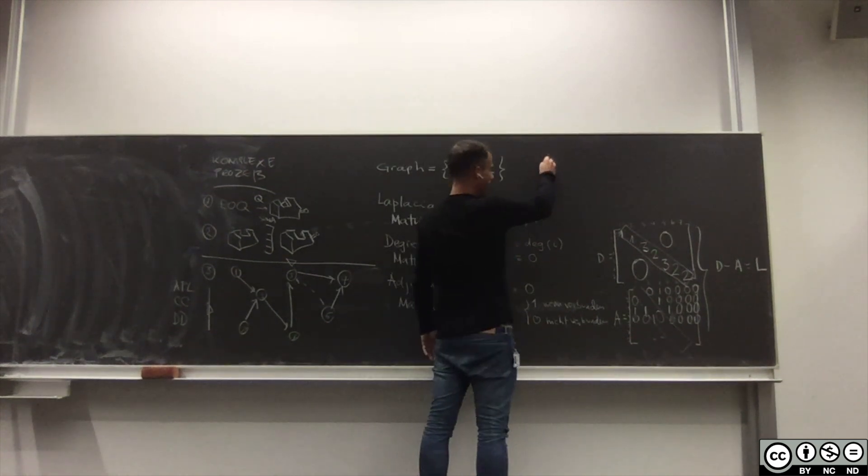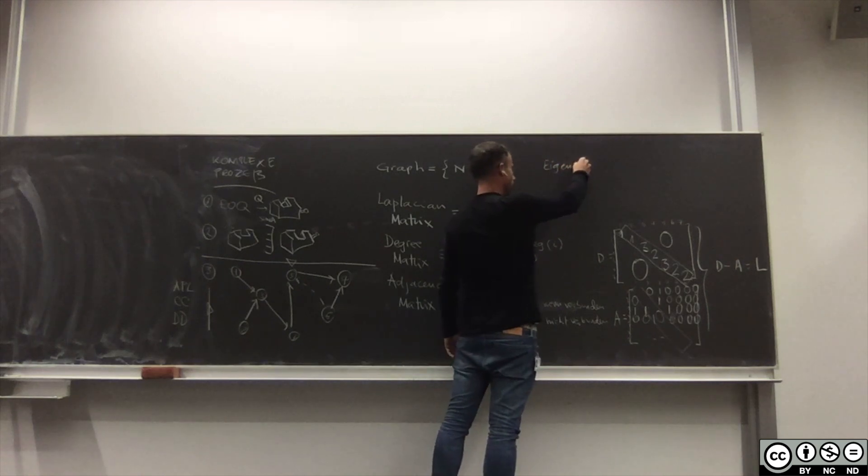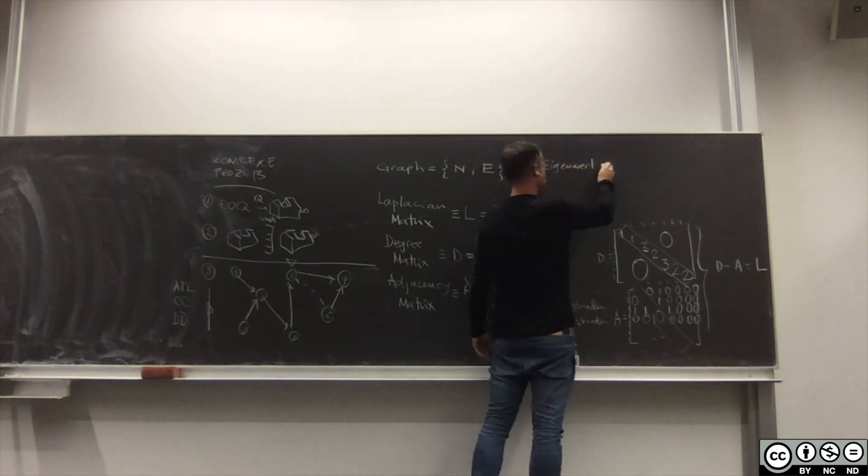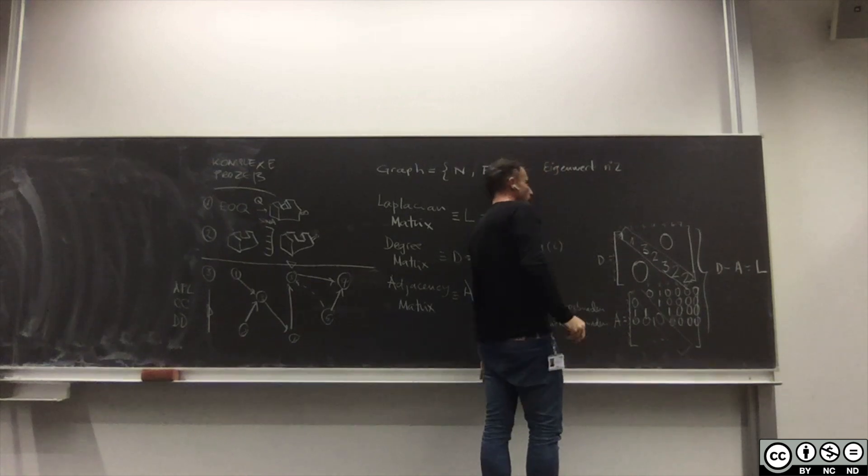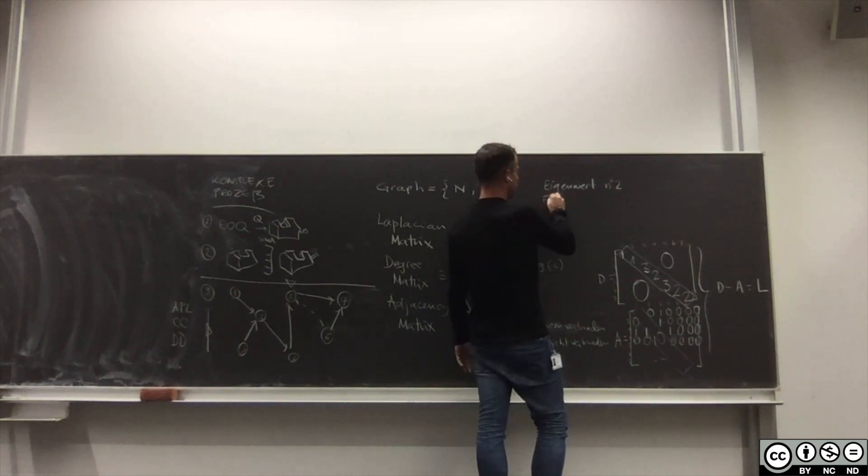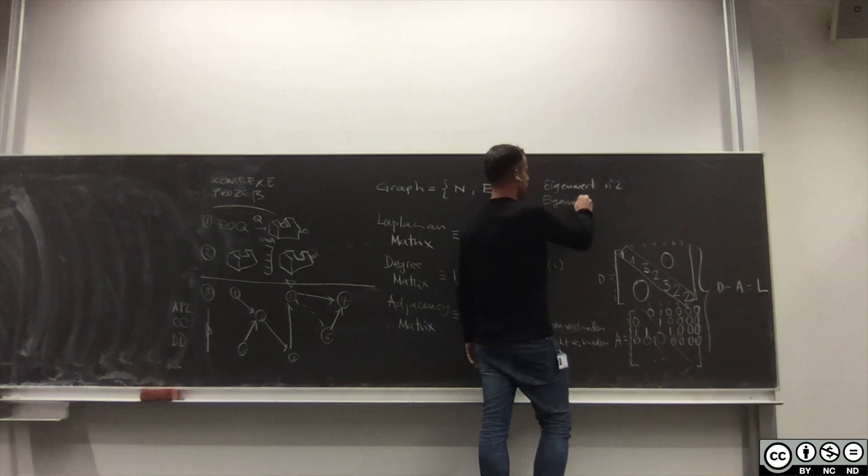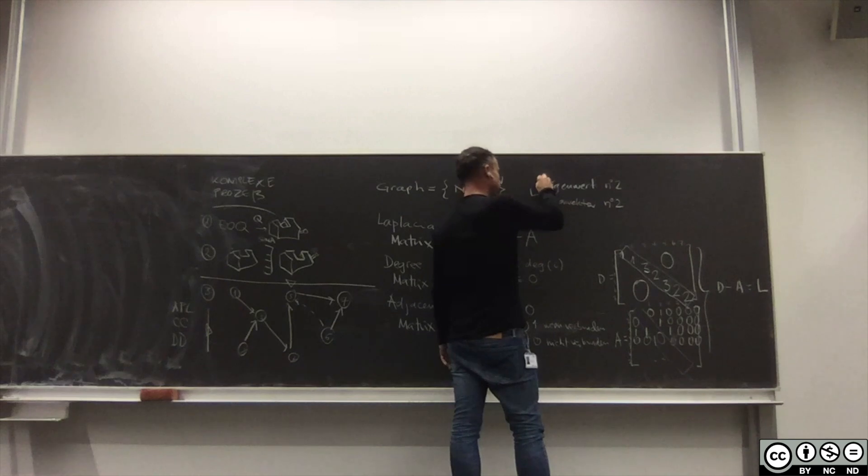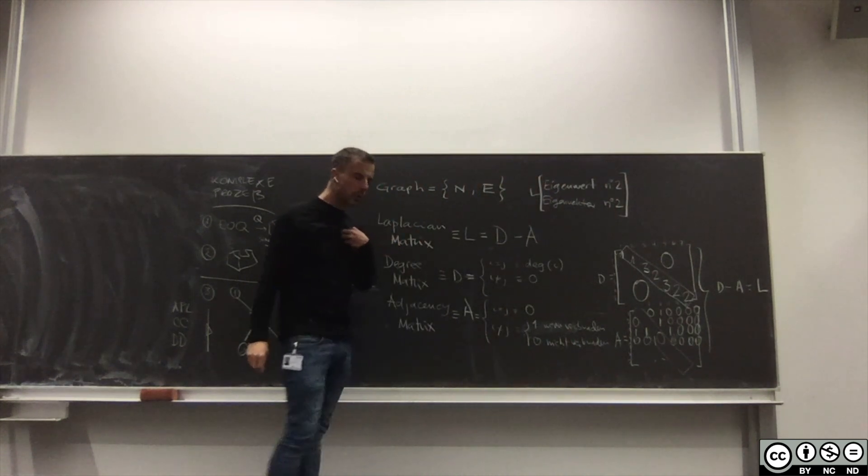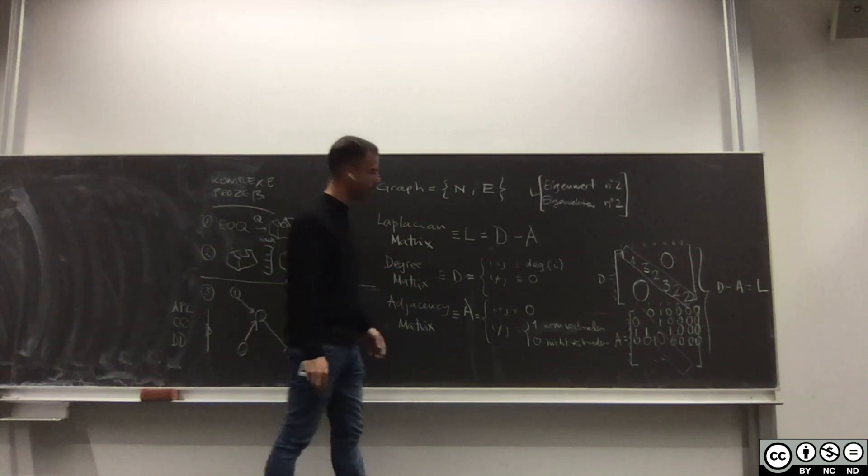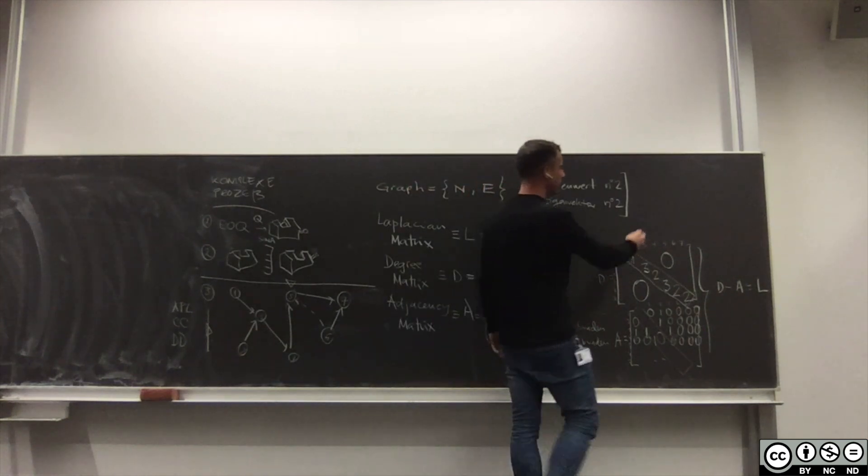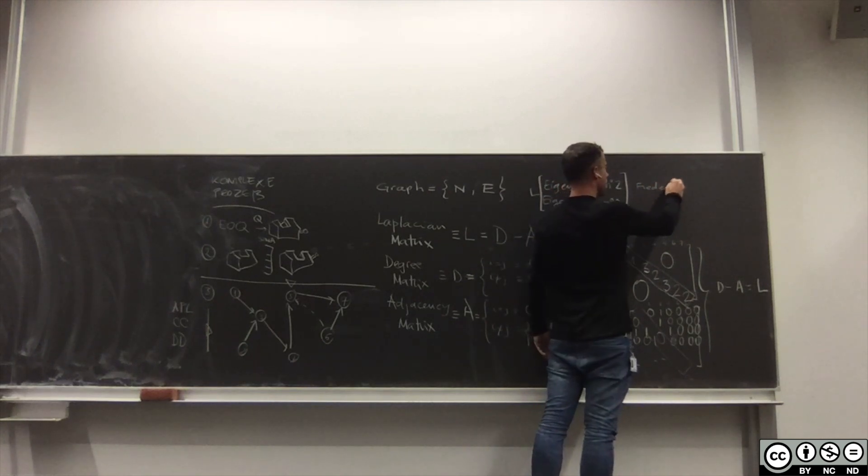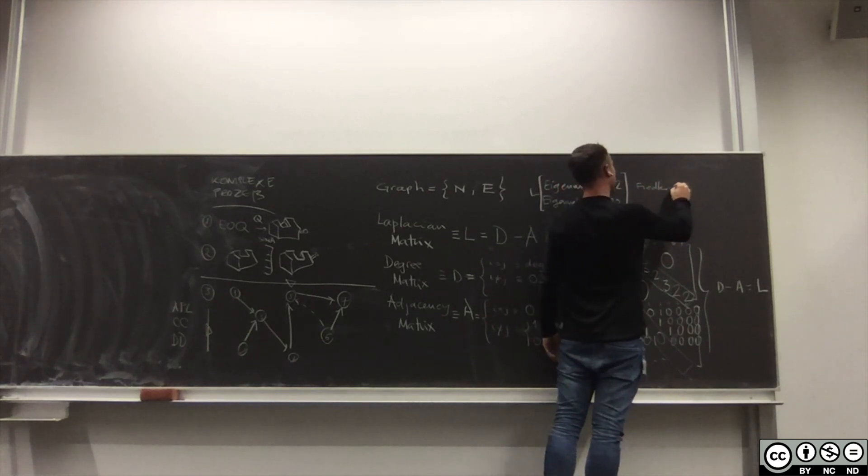Dass der Eigenwert Nummer 2 und der Eigenvektor Nummer 2 von der Matrix Laplacian ist besonders wichtig, weil es sagt viel aus über die Struktur von dem Netzwerk. Die Dinge heißen Fiedler Vektor, Fiedler Wert und Fiedler Vektor.